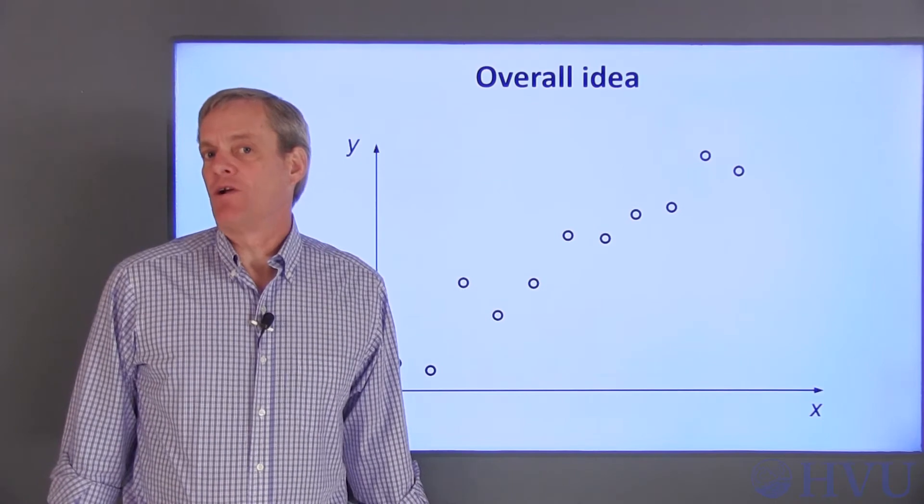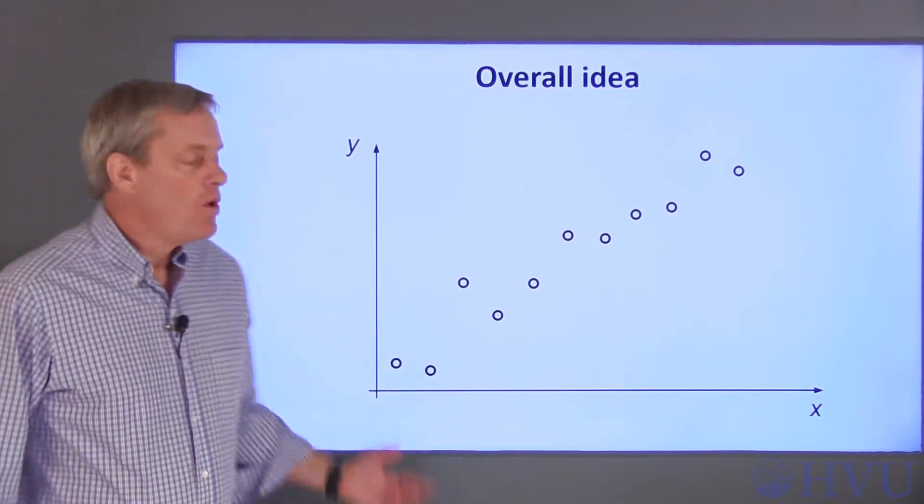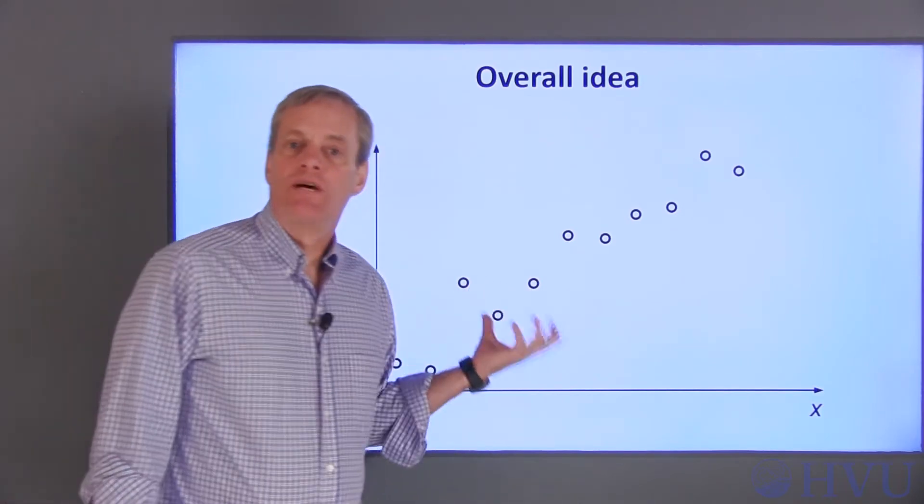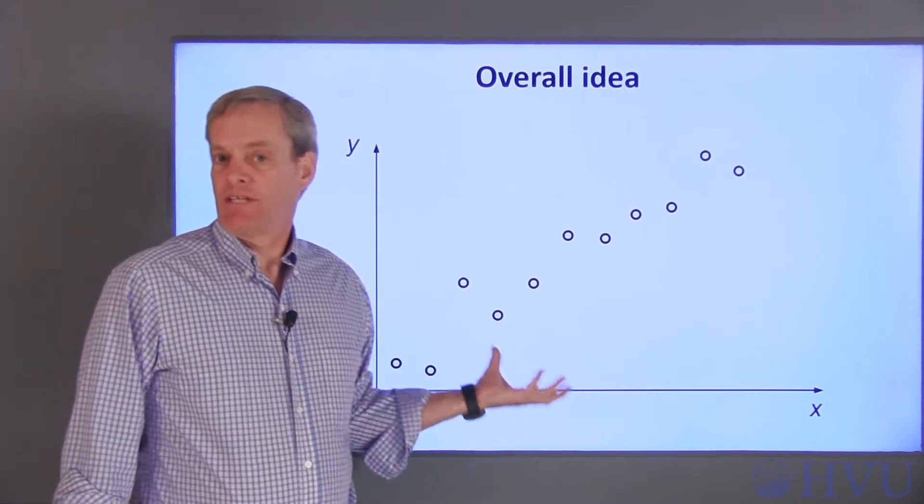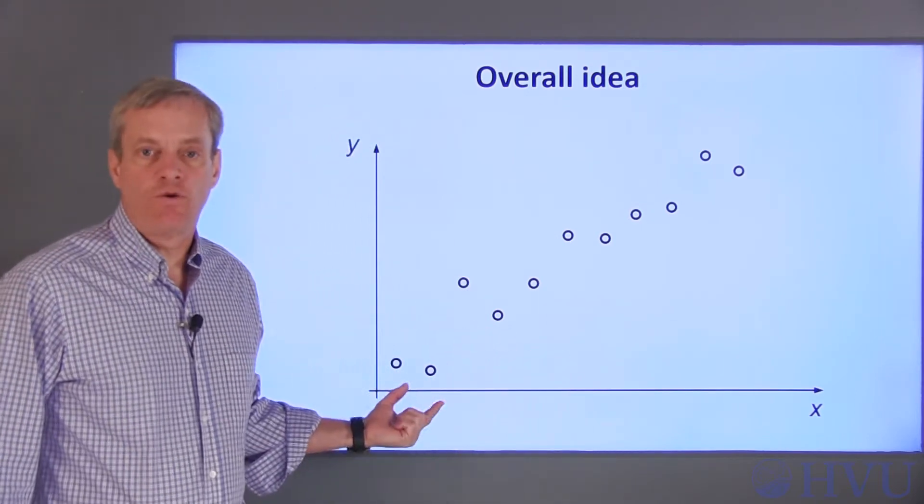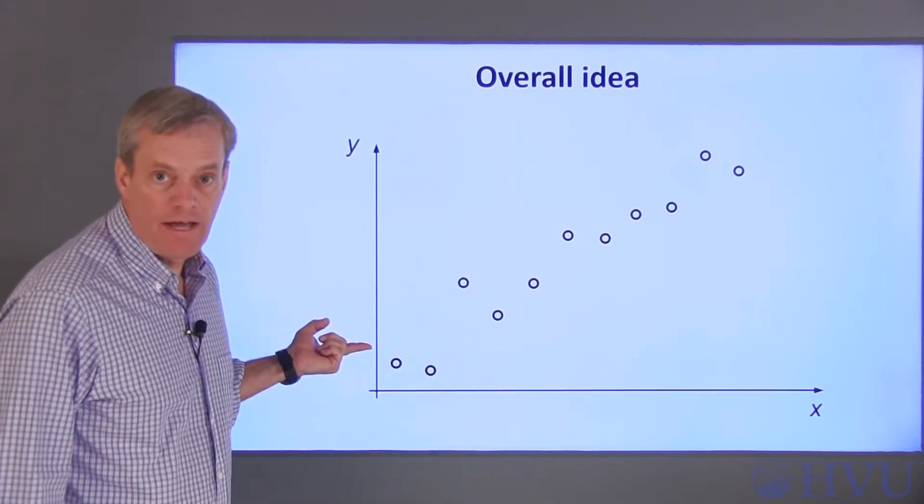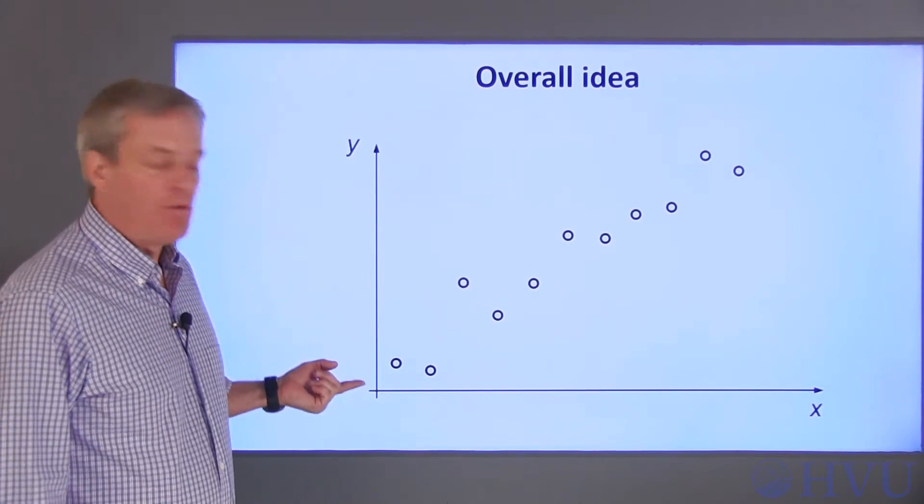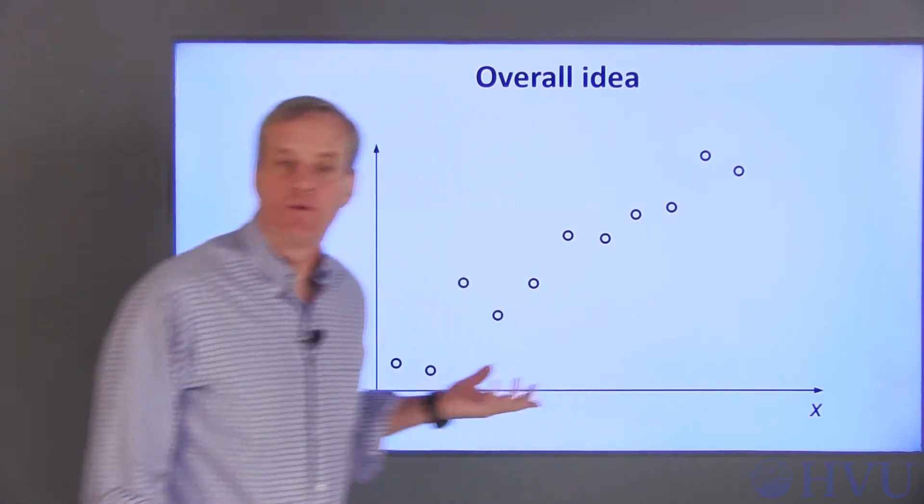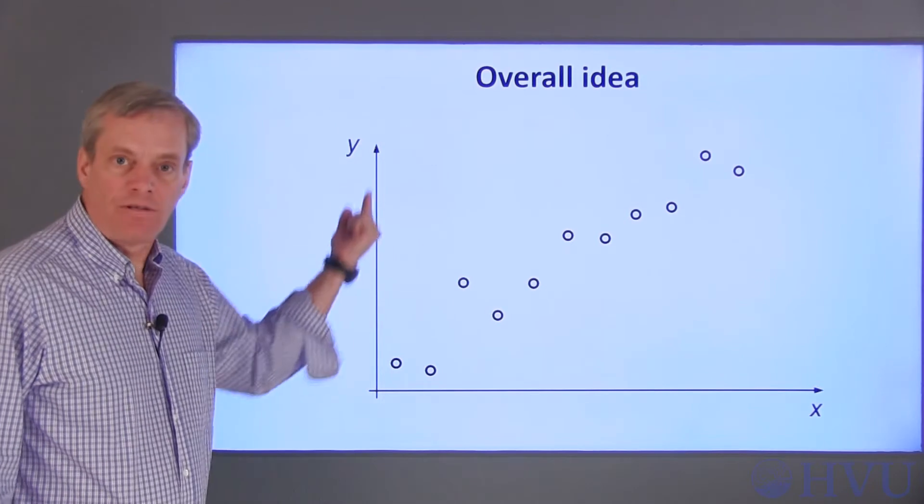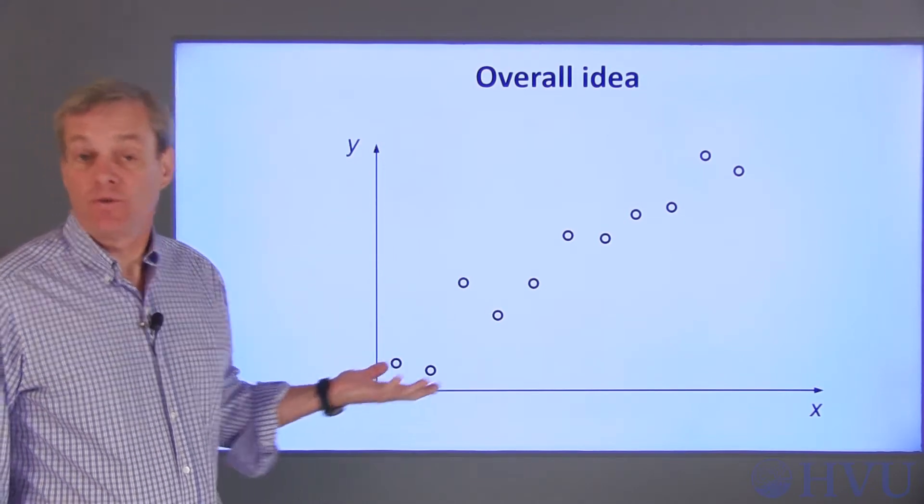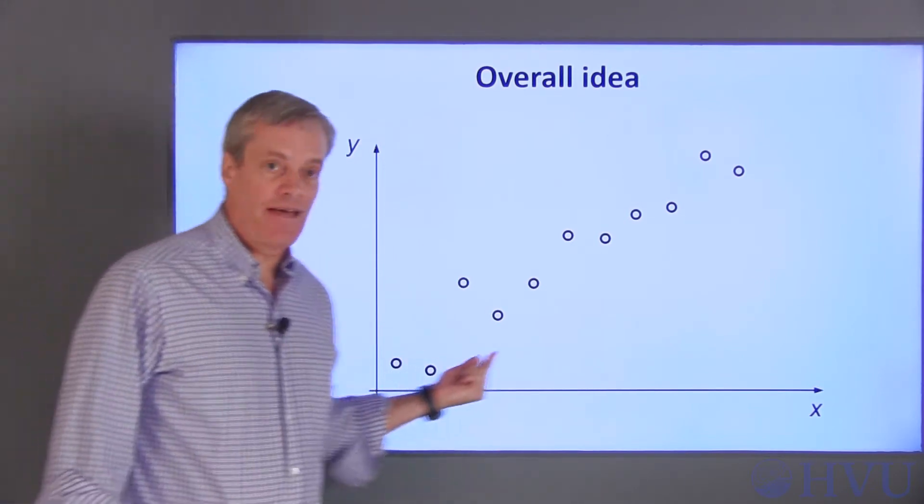First, I want to talk about the overall idea behind curve fitting. We're always going to start out with some measured data that's the result of an experiment, which is usually in the form of pairs of X and Y values. As an example, this horizontal axis may correspond to temperature, and the vertical axis is the Young's modulus, or the strength of a material at that temperature.